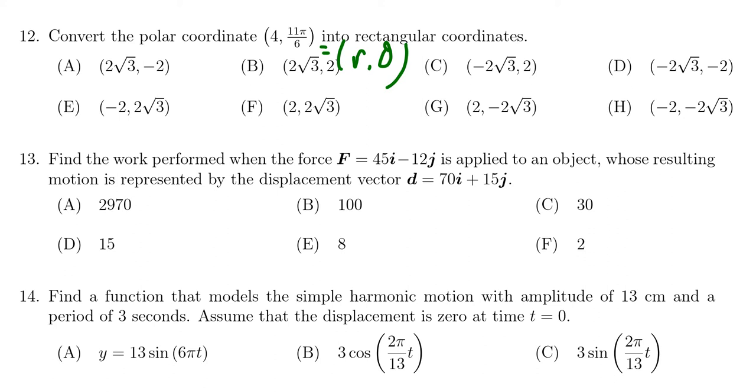The x coordinate is just going to be r cosine θ, so we end up with 4 times cosine of 11π sixths.